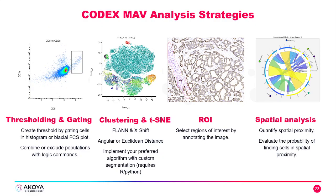There are multiple methods of analysis available inside of MAV. Thresholding and gating is one, where we can—just like flow cytometry—select the cells we want by gating on the populations of interest.